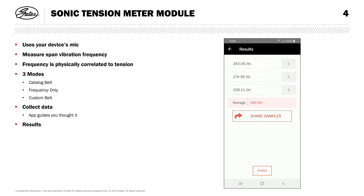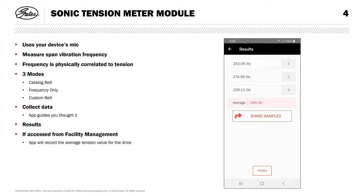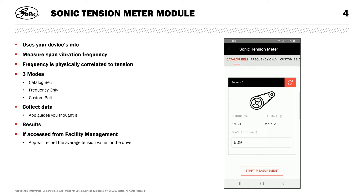Note that you can access this tool from a drive within the facility management module. If you've done that, tapping finish will record the average value and save it to your drive entry. We have a how-to video for facility management, and you'll find a link to that in the description of this video. Check that out for more detail on organizing all your belt drive data and collaborating on it with coworkers, distributors, and Gates representatives. If you've accessed this module from the GDP home screen, remember to record your tension information wherever you store your drive data, then tap finish to clear the results and prepare the app to take another measurement.